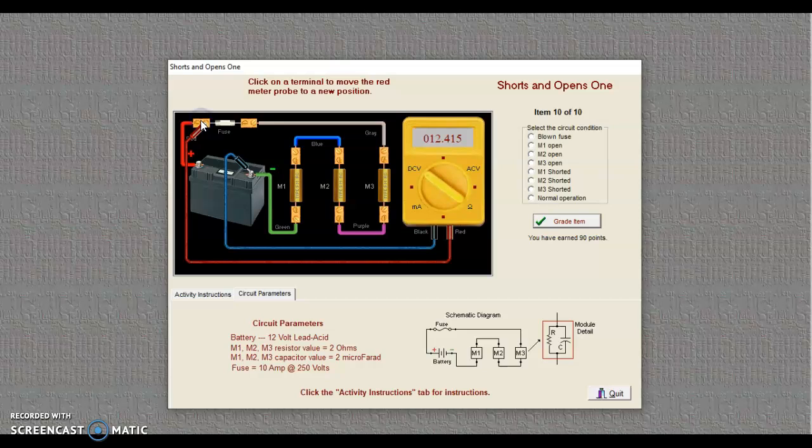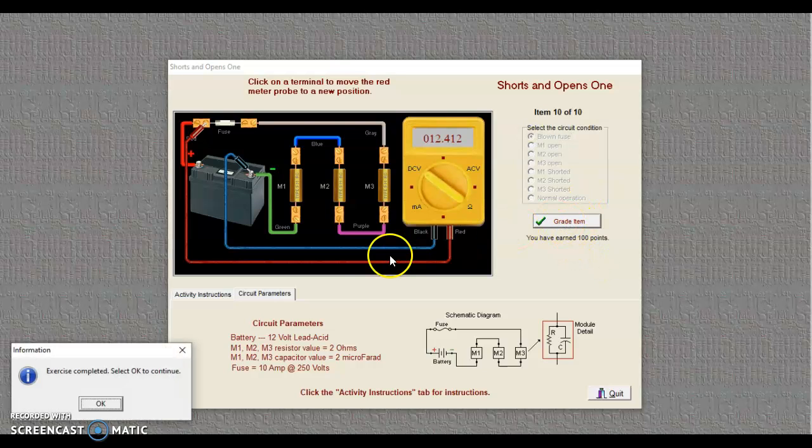So let's come on the other side of M3. We know it's our fuse. Our fuse is blown. And so we can say our fuse is blown. Grade the item. Good. Continue. Okay. And your exercise is complete.